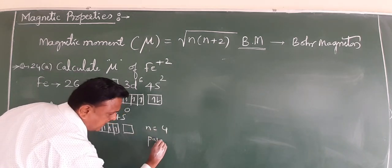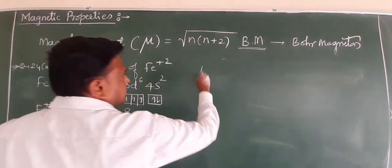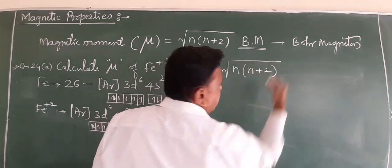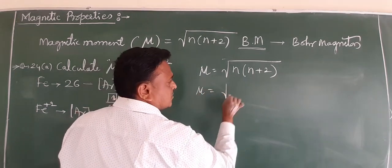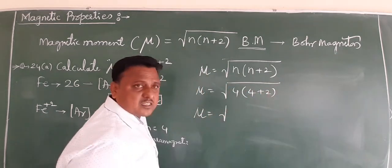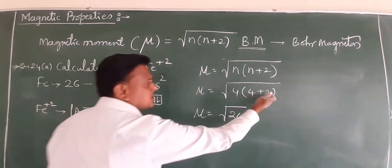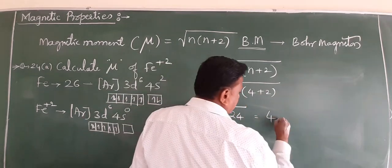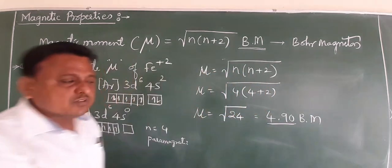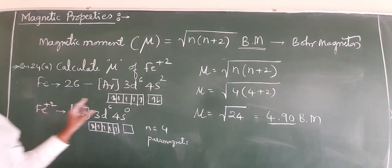Based on n=4, you can calculate μ. μ = √(n(n+2)) = √(4(4+2)) = √(4×6) = √24. The value is 4.904 BM. So μ = 4.904 BM. This is a simple method to calculate your magnetic moment.